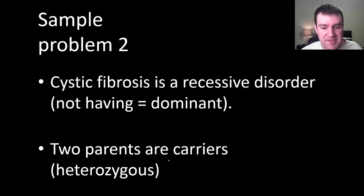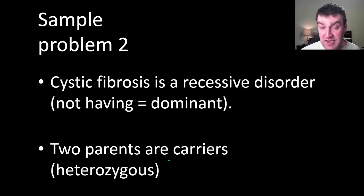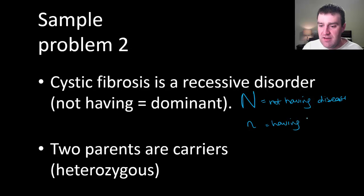Okay. So let's try a second problem. As it turns out, this one relates to humans because there are even some important human traits that follow Mendel's rules. So cystic fibrosis is a recessive disorder. That means not having cystic fibrosis is dominant. So again, let's make a legend first. Maybe we could use N's this time, although you can use whatever letter you'd like. The capital letter is the dominant trait. In this case, not having the disease. And the lower case is having the disease. All right. So we've made our legend.